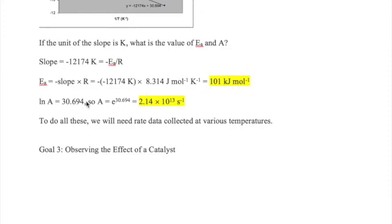Next, the y-intercept can be used to solve for A, the frequency factor. Y-intercept is equal to 30.694, which is equal to ln A. So A is equal to E to the power of 30.694, which is 2.14 times 10 to 13 per second.